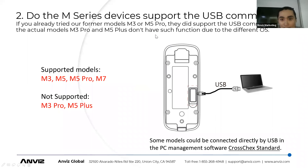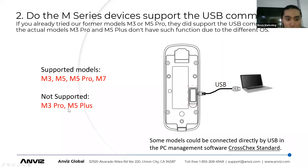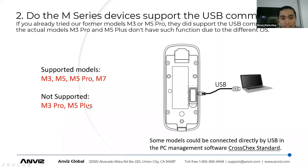The second frequently asked question is about USB communication. As I have the device in my hand, you can see there is a USB port on the back for communication. Formerly, the M3 and M5 devices supported USB communication, but the new updated versions M3 Pro and M5 Plus must be connected via Ethernet cable. However, these two models also support Wi-Fi as an alternative. The former models — M3, M5, M5 Pro, and M7 — still support USB connection.